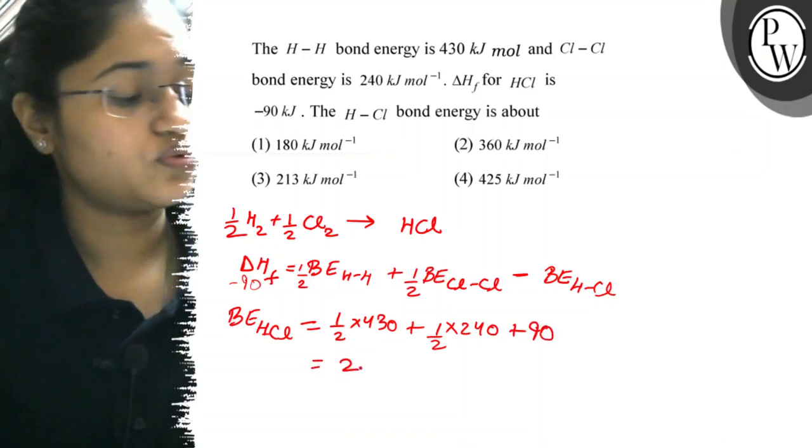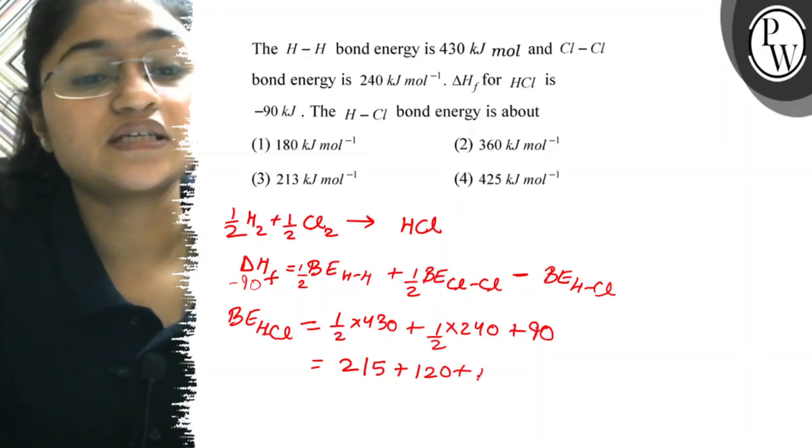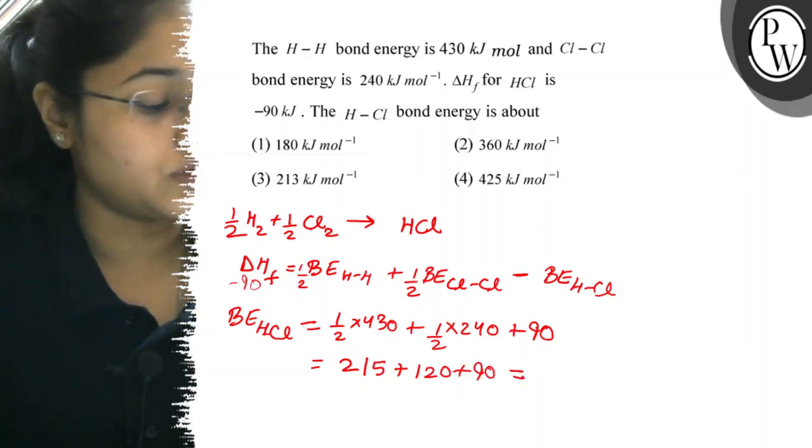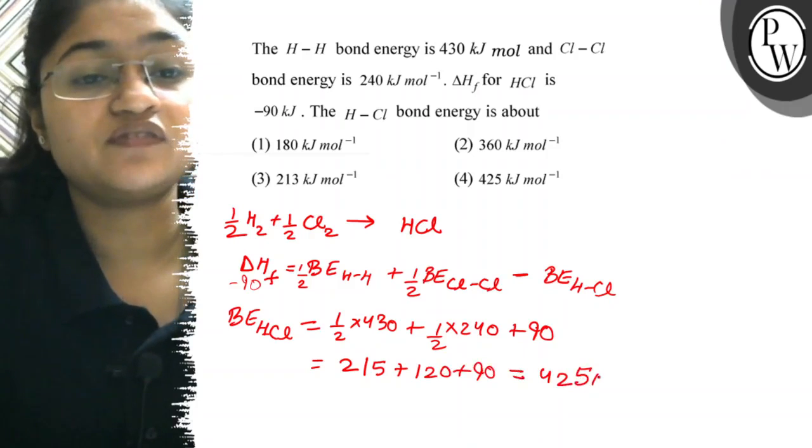Now, 215 plus 120 plus 90, which is approximately 425 kJ per mole bond energy.